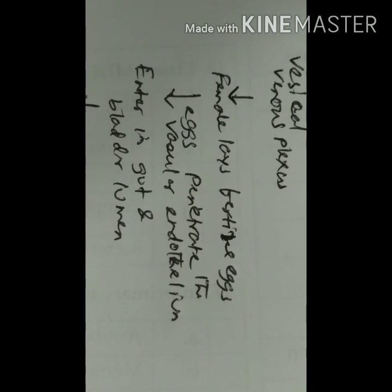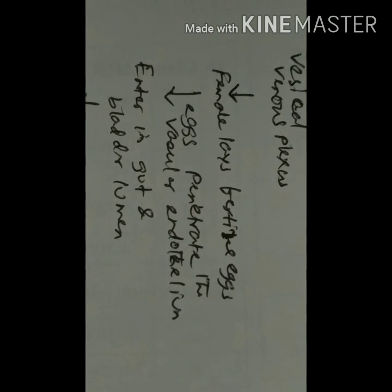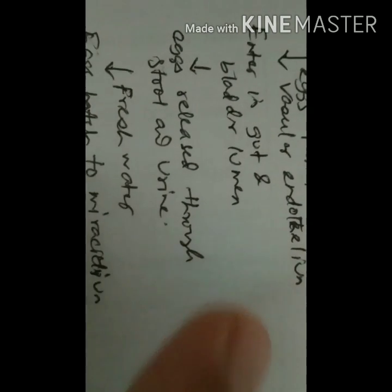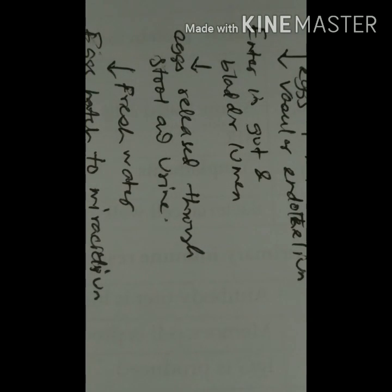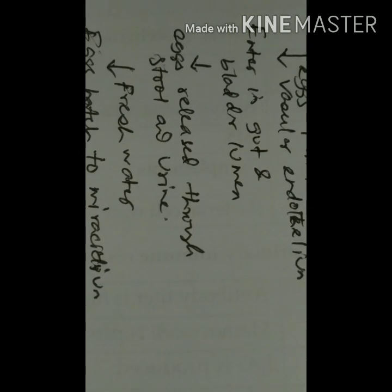The eggs are excreted in stools or urine and must enter fresh water to hatch. Schistosoma haematobium eggs are found mainly in the urine, as they reside around the bladder and penetrate the vascular endothelium to reach the bladder lumen. Schistosoma mansoni and japonicum eggs are found in the stool. For laboratory diagnosis, urine or stool must be examined by microscopy to find the characteristic eggs with spines.